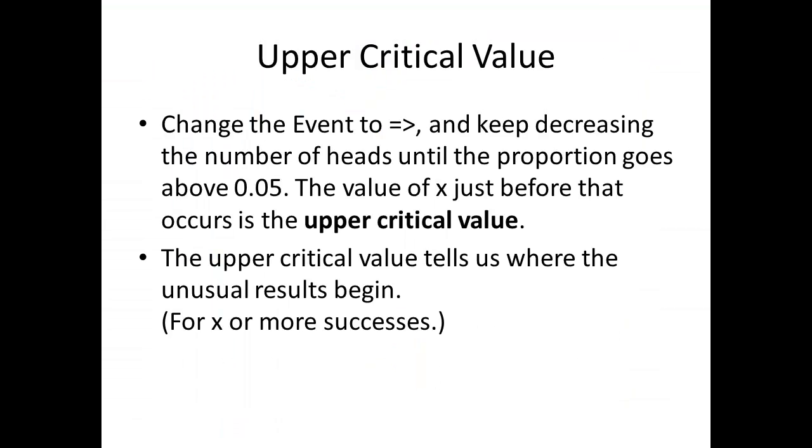We're going to do that in the opposite order. We're going to change the event to greater than or equal to, and then we're going to keep dropping the number of X until the number of heads when the proportion goes above 5% shows up. The value of X that we hit right before that happens is the upper critical value, and that tells us where the unusual results begin on the high side.